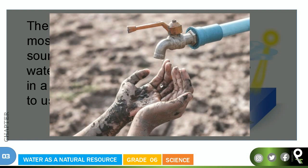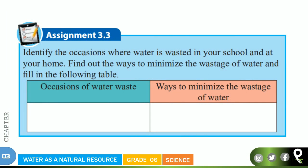Identify the occasions where water is wasted in your school and at your home. That's a good exercise you can do with your family. Find out the ways to minimize the wastage of water and fill in the following table. You're going to fill this table: the occasions of water waste and ways to minimize the wastage of water. When the water tap is leaking, you have to properly lock the tap. When you're brushing your teeth, switch off the tap and then switch on when you only require it. You already saw some of the pictures. You're going to concentrate and consult with your parents and fill this beautiful chart at home. Isn't it a nice assignment?